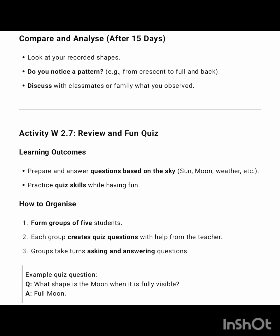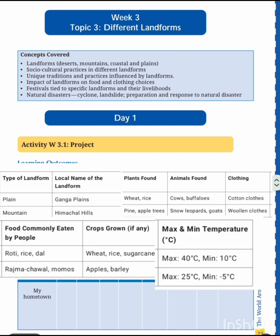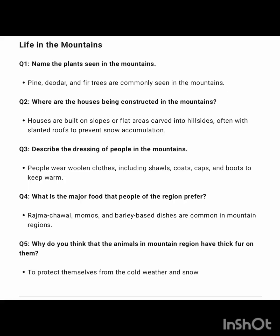Next activity 2.7: fun quiz, learning outcomes, and example quiz questions. Next is week three: different landforms — fill up the complete table with types of landform, local name, planets found, animals found, clothing, food commonly eaten, crops grown, maximum and minimum temperature. Next activity is weekly picture reading: life in the mountains — five questions are given and answers are provided.